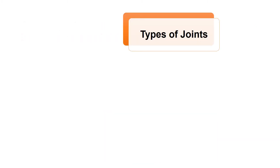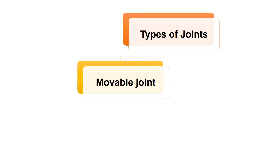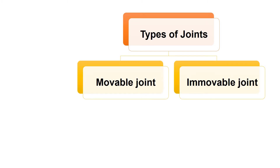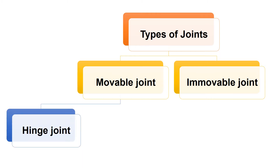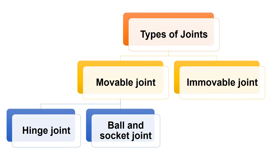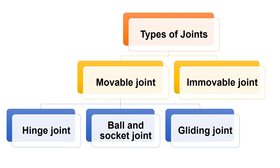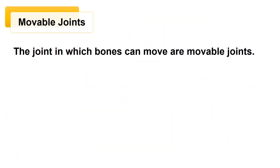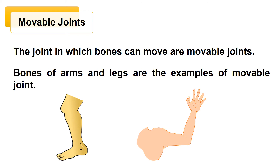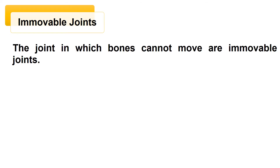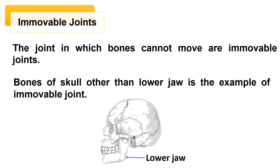Now let's discuss the types of joints. There are two types of joints: moveable joints and immovable joints. Moveable joints are further classified into three types: hinge joint, ball and socket joint, and gliding joint. Moveable joints are joints in which bones can move — bones of arms and legs are examples. Immovable joints are joints in which bones cannot move — bones of the skull, other than the lower jaw, are examples of immovable joints.